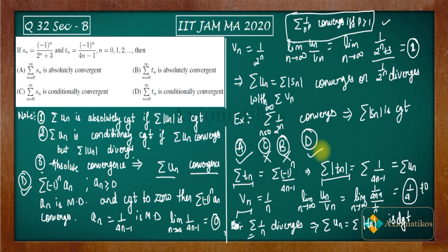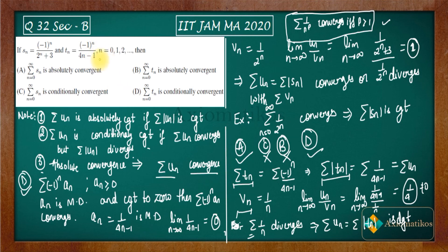So options A and D are correct, and options B and C are incorrect. It took time to explain everything, but when you do this in the exam you already know all these statements, so it should not take more than 2 minutes. This is how you can solve it.